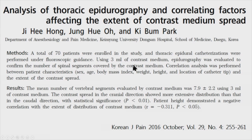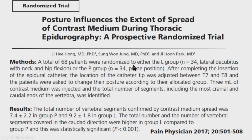A couple of other groups have also looked at this. The Korean group has published several articles. They injected 3 mLs of contrast material through a catheter at T7-T8 and showed that contrast goes up about 8 segments on average with 3 mLs. It usually spreads more in the cranial direction than the caudal direction, which makes sense because the epidural space higher up is at negative pressure — creating a pressure gradient that pushes contrast upward. They also showed patient height is inversely correlated with spread. In a subsequent study on posture, the lateral decubitus position produced greater cranial spread than the prone position.